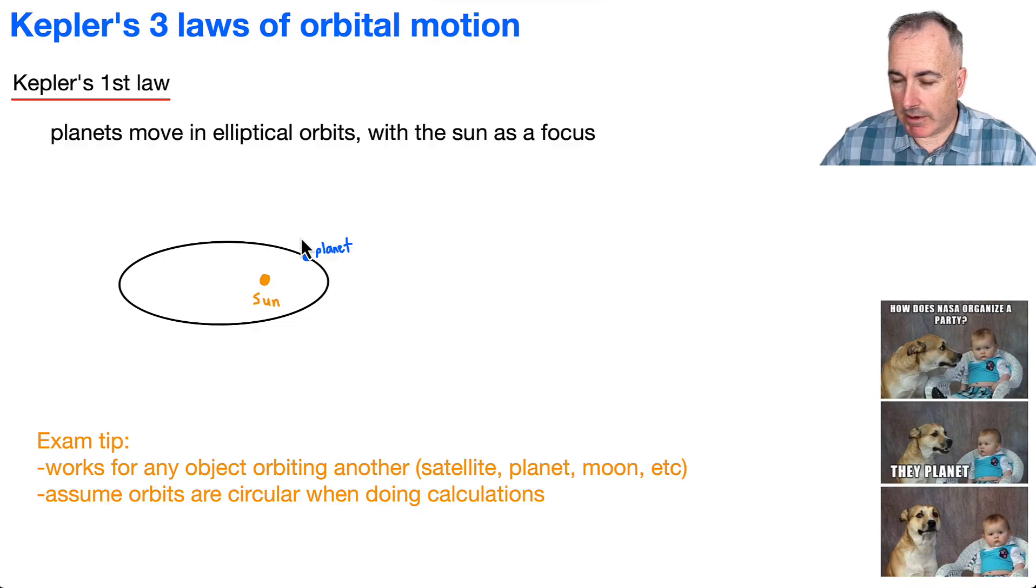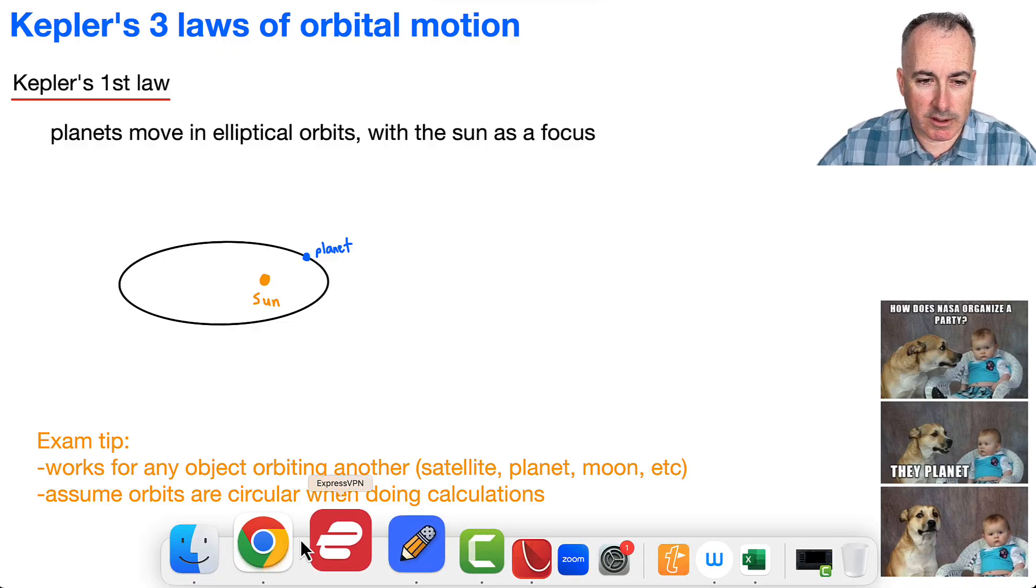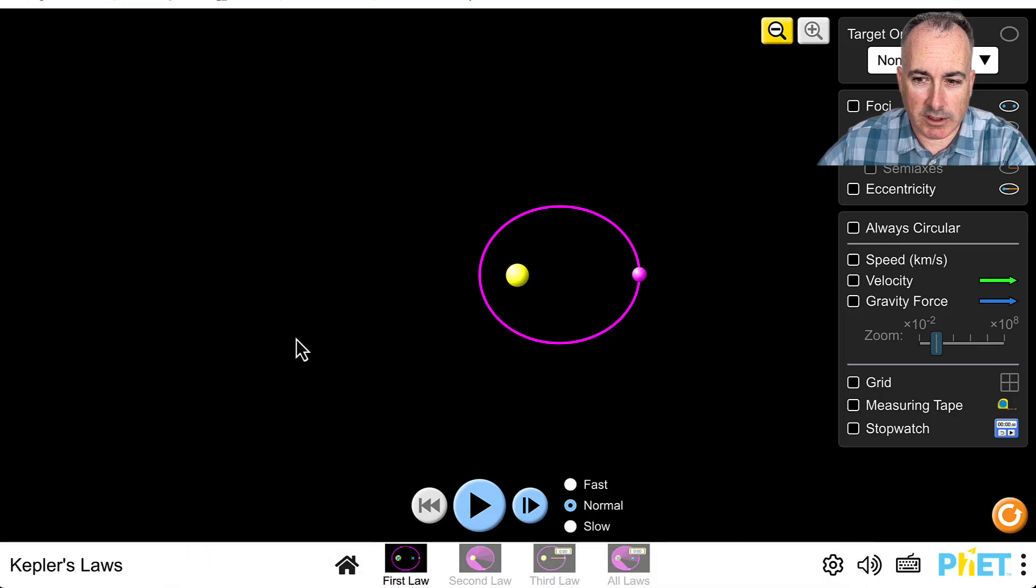He said planets move in these kind of orbits with the sun like this, but it turns out a moon going around a planet is going to be the same thing, or a satellite going around the earth. All the same. Let's actually take a look at this. I've got a little animation right here from PHET.